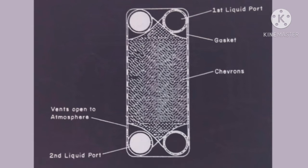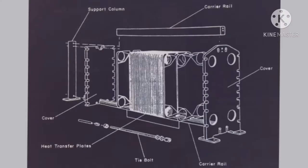The most important point is capacity can be increased by introducing plates in pairs. We can increase or decrease the capacity of the heat exchanger by introducing or excluding number of plates in pairs. If we want heat transfer efficiency to increase, we can introduce more number of plates in pairs. This is the biggest advantage of the plate type heat exchanger.